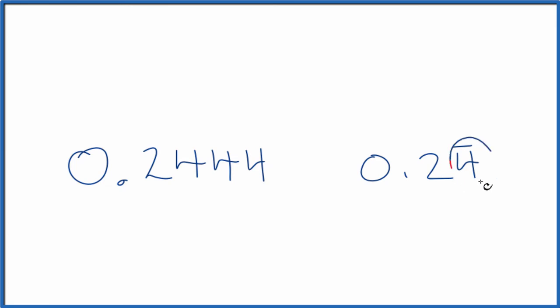What we want to do is get rid of the repeating part of the decimal. If we can do that, then it's just converting a normal decimal to a fraction. That's not so bad. So here's how you do it.